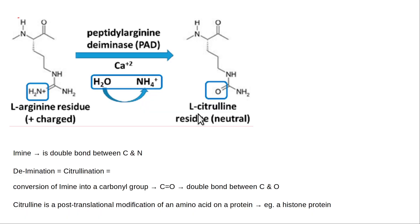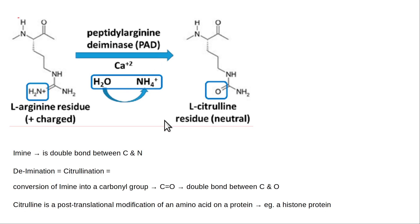Here is a more specific chemical description of citrullination. You have an L-arginine residue, which has a carbon double-bonded to a nitrogen with an extra hydrogen — making it positively charged. The enzyme that performs this reaction is called peptidyl arginine deiminase, or PAD. It converts arginine to citrulline.